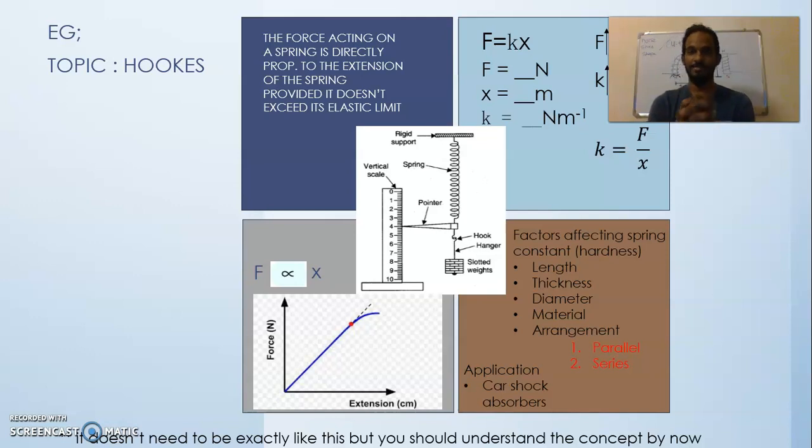In my next video I'm actually going to help you all on how to get these units. And then, like I said, from the formulas you can actually relate. So basically, the higher the force, the higher the extension. Then if the spring constant value is very high, the spring would experience very less extension. Factors that affect the spring constant—so spring constant is basically the hardness of a spring—you've got the factors that affect it: the length of the spring, the thickness of the spring, the diameter of the spring, material, the arrangement of the spring, either parallel or series.